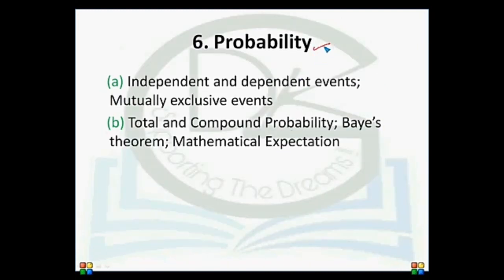The sixth chapter is Probability, also 10 marks. Topics include independent and dependent events, mutually exclusive events, total and compound probabilities, Bayes theorem, and mathematical expectations.